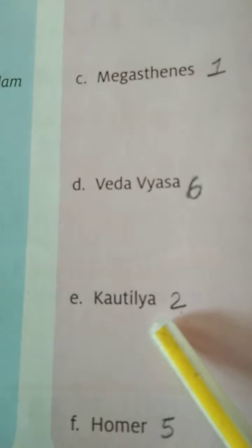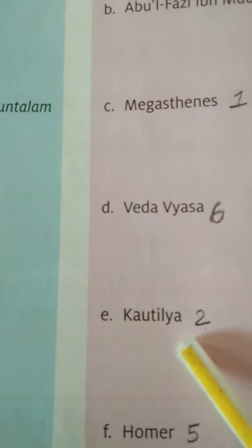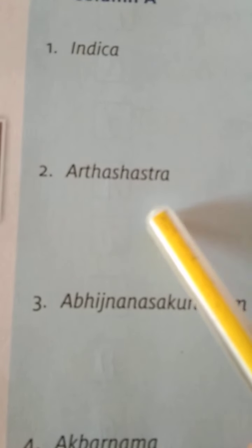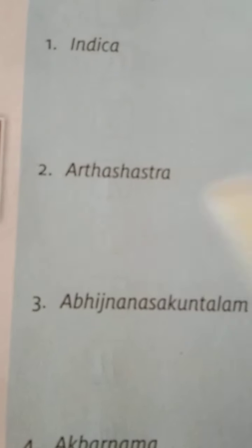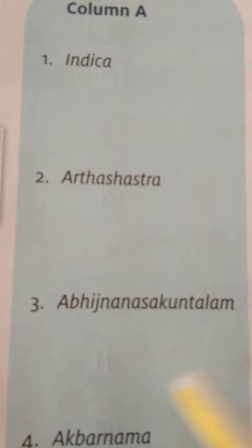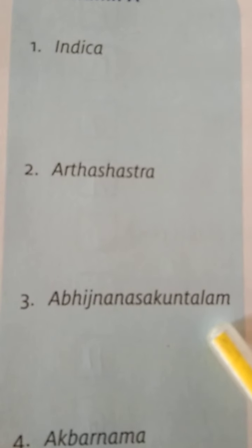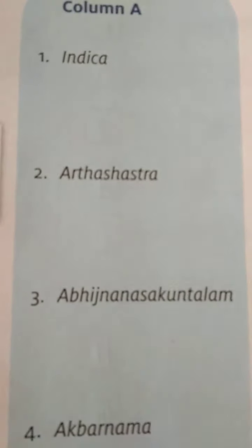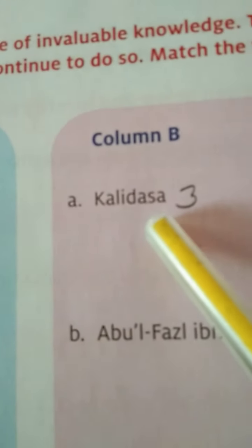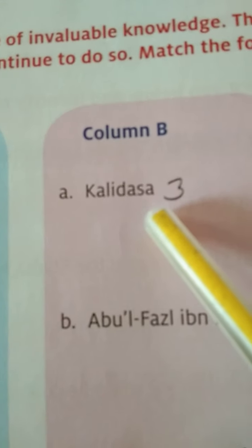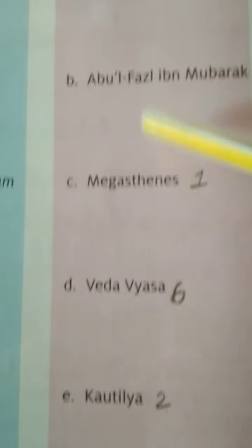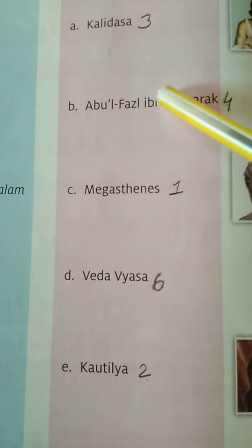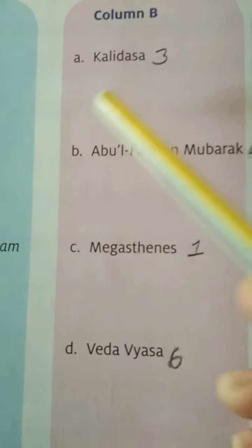Kautilya is known as a person of great intelligence, and you can see that from the name of the book — Arthashastra — which means the knowledge in this book is not less. Number three is Abhijnanasakuntalam, and the author of this book is Kalidasa. Kalidasa was also a famous person; all the authors listed here are famous and their lives were full of struggle.